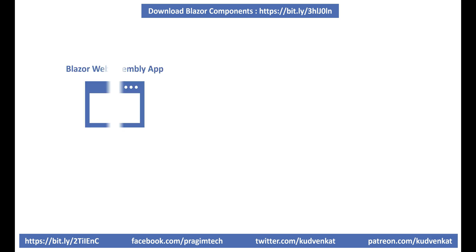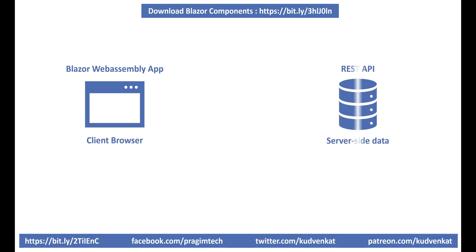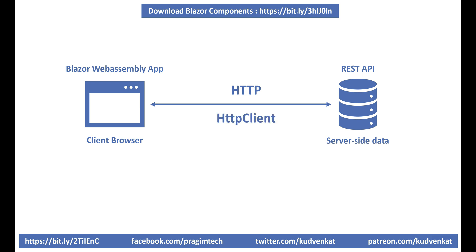As we already know, a Blazor WebAssembly application runs on the client side in the browser. What if the application needs server-side data? Well, it can communicate with the server over HTTP. In Blazor, we use a class called HttpClient to make HTTP calls to send and receive data from an API.